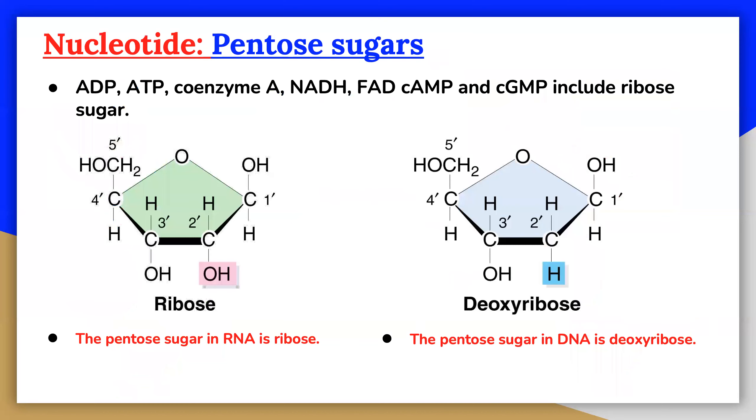In chemistry, a pentose is a simple sugar with five carbons. Pentoses are very important in biochemistry. The pentose sugar in DNA is deoxyribose and in RNA, it is ribose. The difference between the sugars is in the presence of hydroxyl group on the second carbon of the ribose and hydrogen on the second carbon of the deoxyribose.